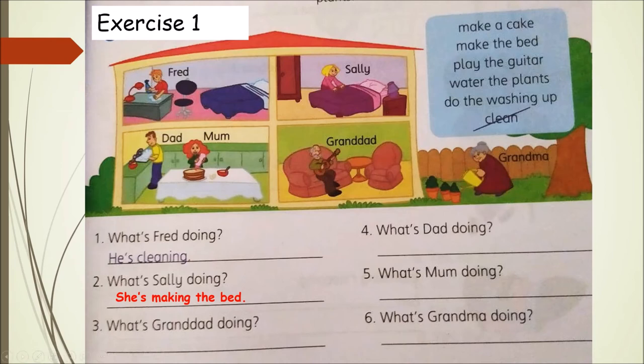We will throw away the 'e' — it becomes 'making'. Number three: What's Granddad doing? Number four: What's Dad doing? Number five: What's Mom doing? Number six: What's Grandma doing?